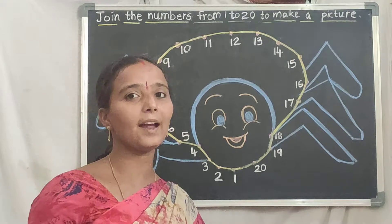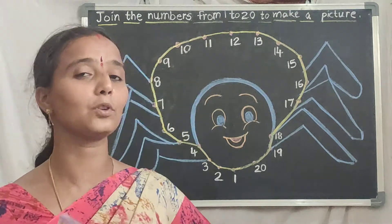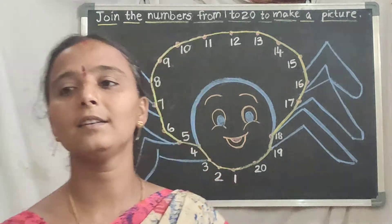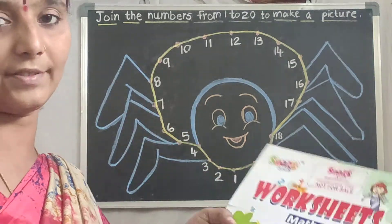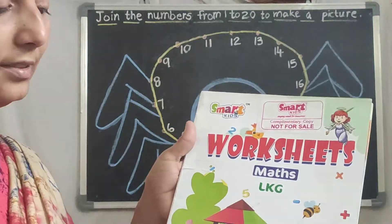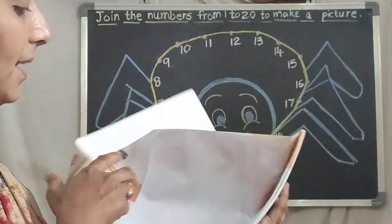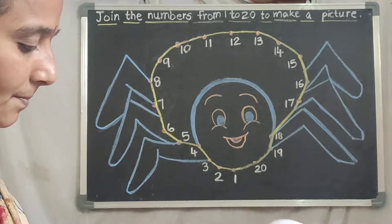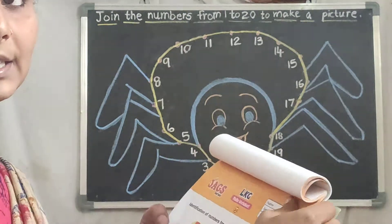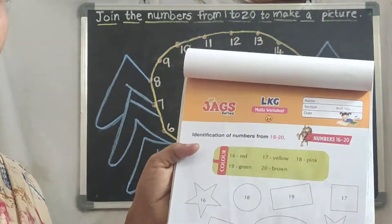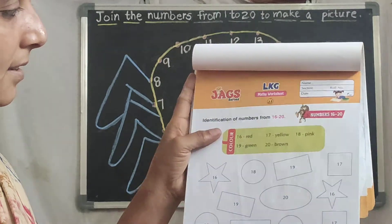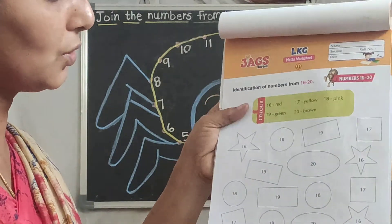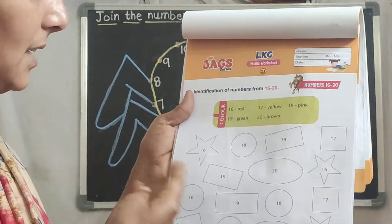Before that, you should learn the numbers up to twenty. After completing this page, take your number work worksheet and open page number 23. Look here children — this is page 23. What can you see here? All kinds of shapes — star, circle, rectangle, square, oval. All shapes are here.